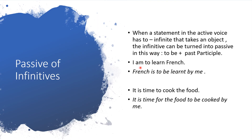Whenever we have an infinitive (to + verb) in an active sentence, we turn it into passive by adding 'to be' + past participle. I am to learn French — French is to be learned by me. It is time to cook the food — It is time for the food to be cooked by me. This is the correct transformation from active to passive voice for infinitive structures.